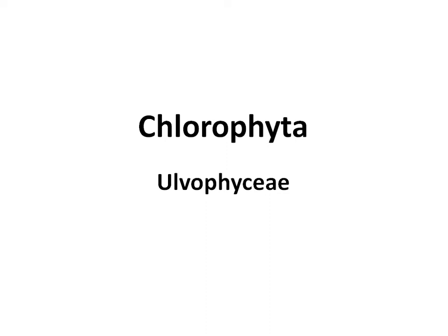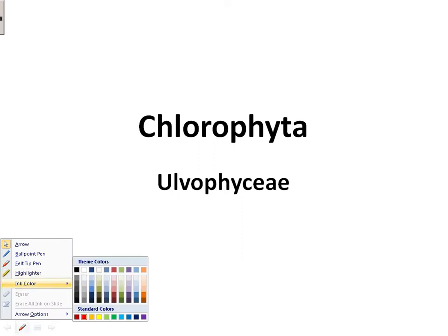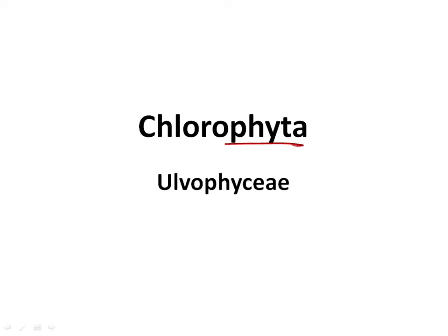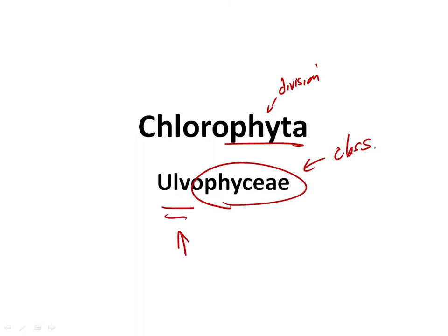Today we're doing our second class of the Chlorophyta. Chlorophyta is the division, and 'phyceae' is the ending for class. This is the Ulvophyceae — Ulva is a genus within this class, so the name of the class comes from the name of a genus. There are non-binding rules within the botanical code of nomenclature that say you should name higher-level groups based on the name of a genus within that group. Ulvophyceae is one of those cases. Charophyceae will be the next class we do, also named from a genus.